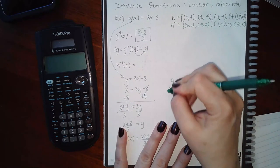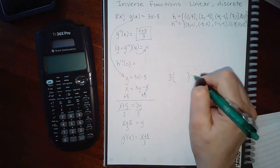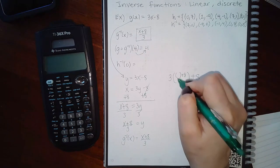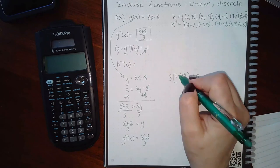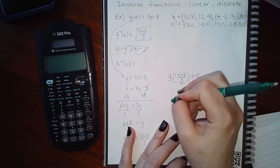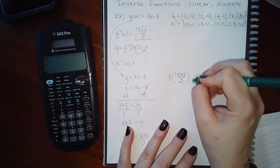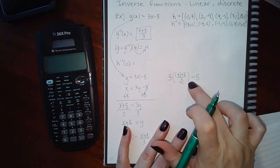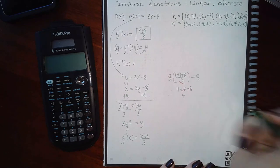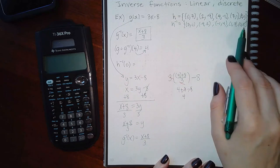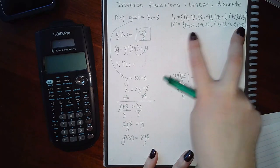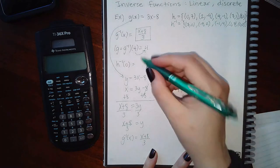To verify: write g on the outside with a blank, and plug in g-inverse which is x plus eight over three. The threes cancel out. Note there's a correction here — the function should be three x minus eight, not plus eight. With three x minus eight, plugging in gives the eights cancel, leaving just x — confirming they are inverses. For h-inverse, plugging in zero: the point where zero was the input gave eight as the response, so the answer should be eight.